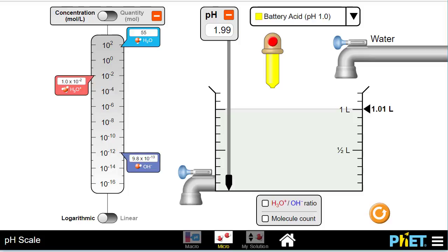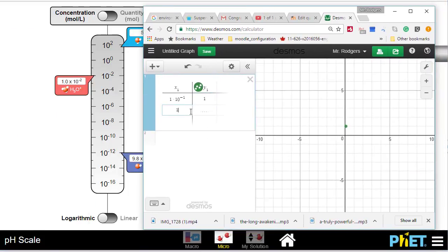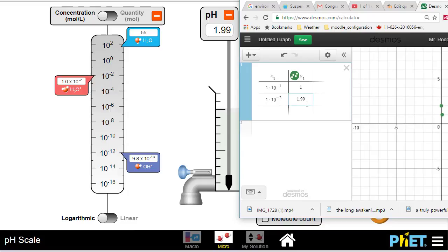Now I can see that the concentration is 1 times 10 to the exponent negative 2, correlating with a pH of 1.99, pretty close to 2. So the pH has gone from 1 to 2.